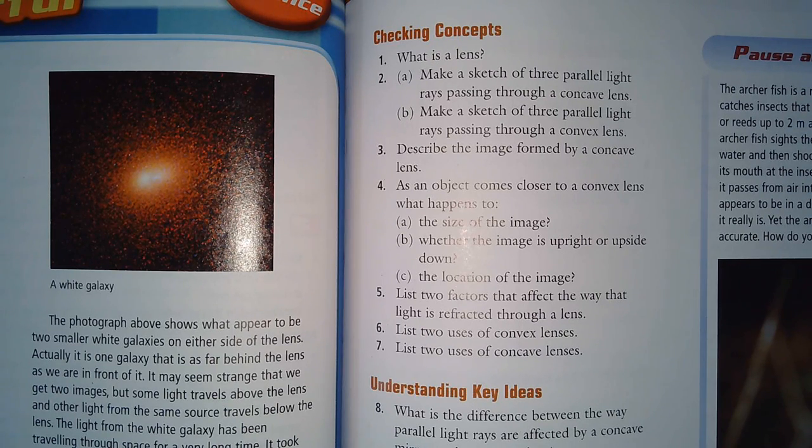So let's start with the classwork. We looked at lenses last class. Number one: what is a lens? A lens is basically a transparent material—it can be made of glass, it could be made of plastic—that is curved and allows light to go through, and then the light on the other side becomes refracted.